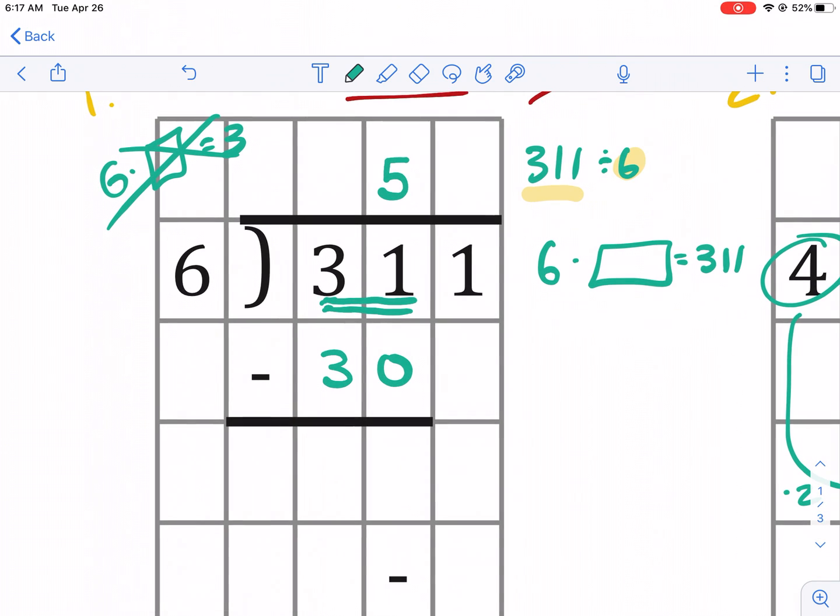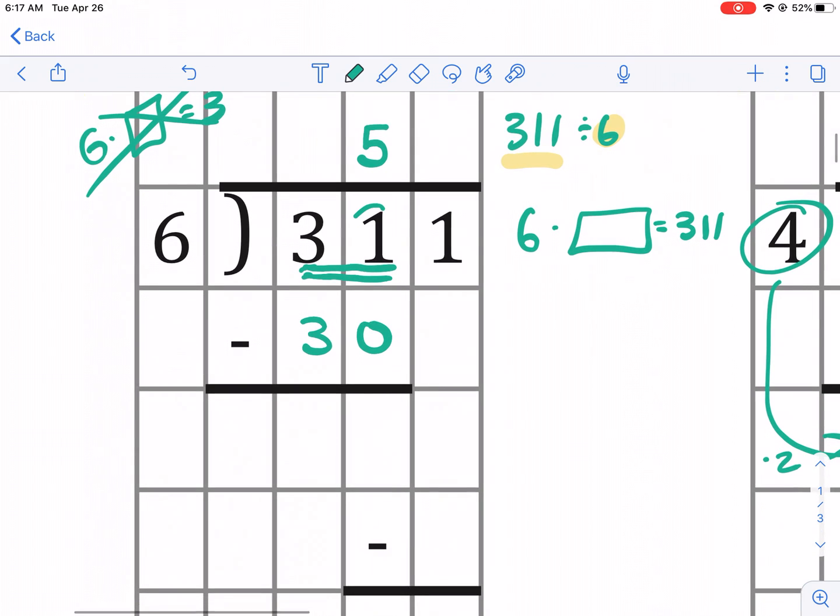So now we have 31 minus 30. We want to see what's left over. Because we have to account for that extra one in there. So we're going to do 31 minus 30. And that's just one.